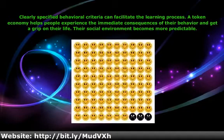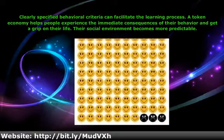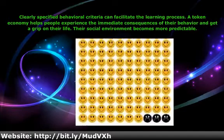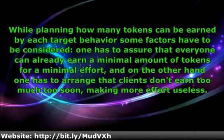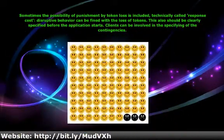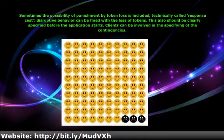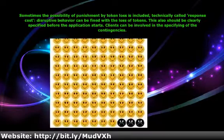A token economy helps people experience the immediate consequences of their behavior and get a grip on their life. Their social environment becomes more predictable. While planning how many tokens can be earned by each target behavior, some factors have to be considered. One has to assure that everyone can already earn a minimal amount of tokens for minimal effort, and on the other hand one has to arrange that clients don't earn too much too soon, making more effort useless. Sometimes the possibility of punishment by token loss is included — technically called response cost — where disruptive behavior can be fined with the loss of tokens. This also should be clearly specified before the application starts, and clients can be involved in specifying the contingencies.